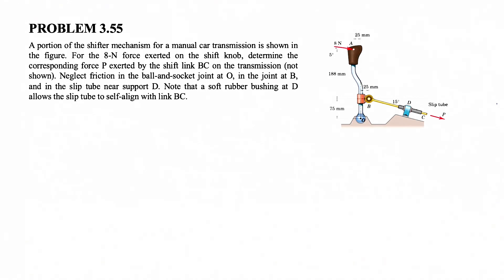We have an 8N force that is exerting on the shift knob at point A and we need to determine the corresponding force P exerted by the shift link BC on the transmission. So we're talking about this part of the figure which is not shown in here.